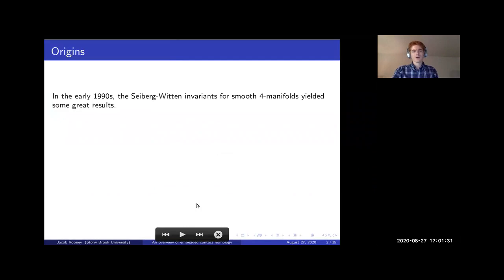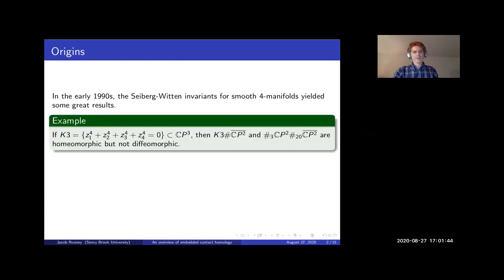So we'll start with an origin story. In the early 1990s, people studied the Seiberg-Witten invariants for four manifolds and got a bunch of really great results. For an example, if you consider the K3 surface, which is the zero locus of this degree four polynomial in CP³, and you connect sum it with CP² bar, which is CP² with reversed orientation, then that's homeomorphic but not diffeomorphic to the manifold you get by connect summing three CP²s and 20 CP² bars. This is an interesting example of things that you can do with Seiberg-Witten invariants.